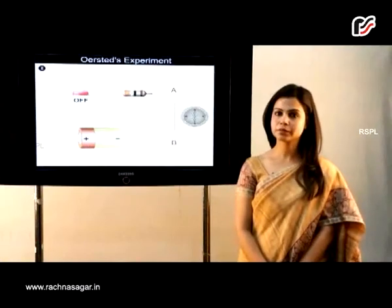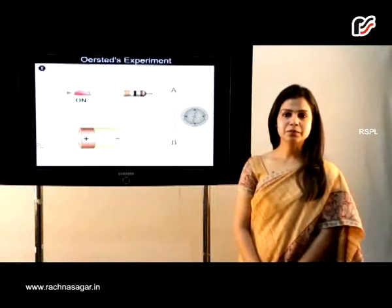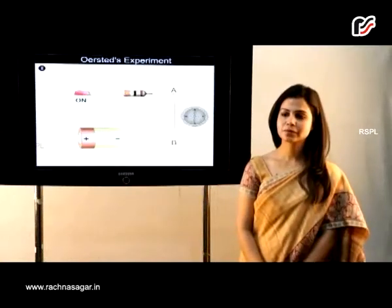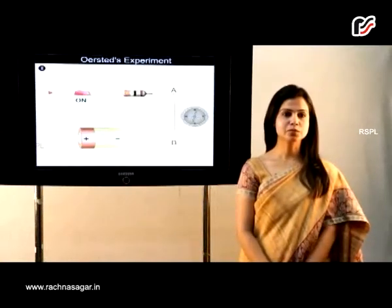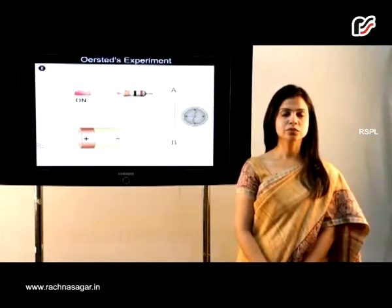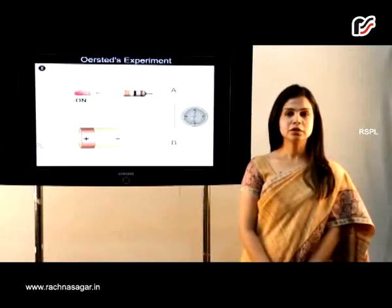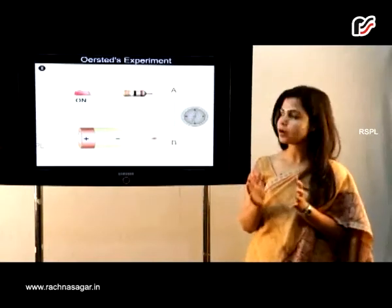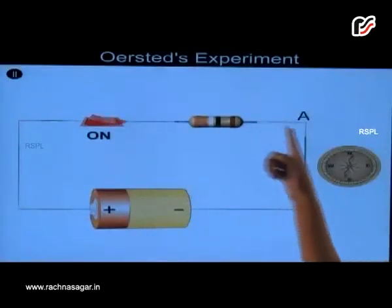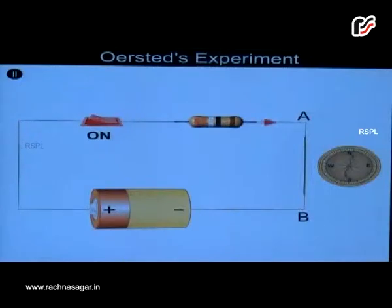Let us observe an experiment. What do you observe in this experiment? We can see that as soon as the switch was on, there is a deflection in the needle, and when the switch was off, there was no deflection in the needle. So we see that the current passing through the circuit and the deflection observed in the galvanometer are related with each other.